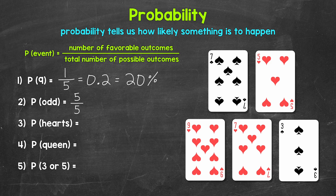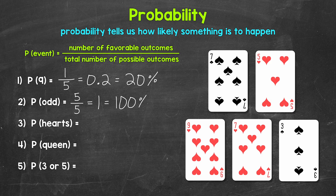Let's divide the numerator by the denominator to get our decimal — that's going to be one, one whole. Keep in mind, whenever we have the same number on the top and bottom, our decimal is just one. Since this is a whole number, we typically don't write the decimal point, but remember a decimal point comes after the ones place. Our percent here is 100%. Five out of five cards have an odd number, so we have a 100% chance. This is what we call a certain event — we're 100% certain it will happen.